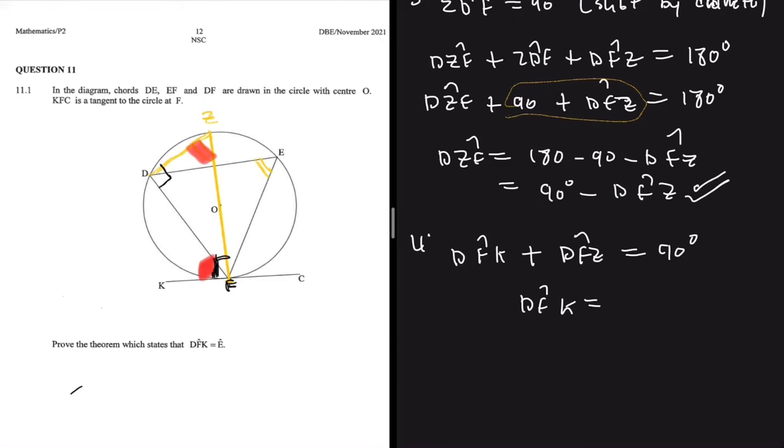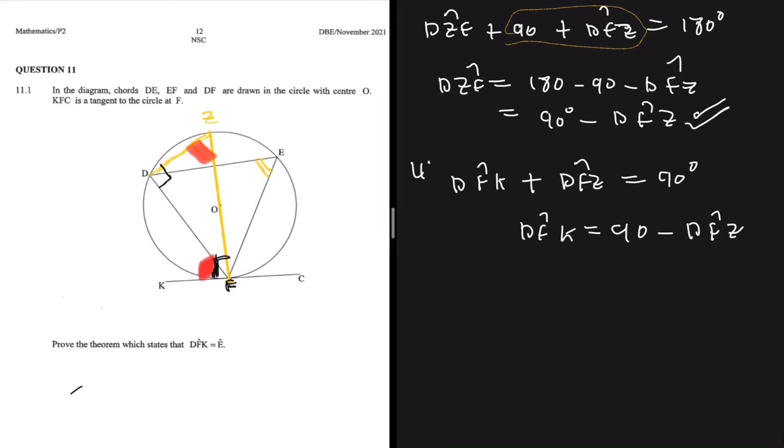Now we can see that DFK is equal to DZF, but we know that DZF is equal to E. So that will all be equal to E, and by that we have proved the tangent-chord theorem. You might be asking yourself, is that all or do we have to do something else?